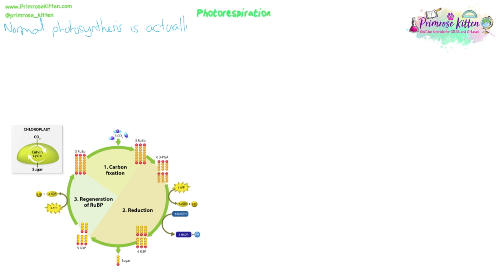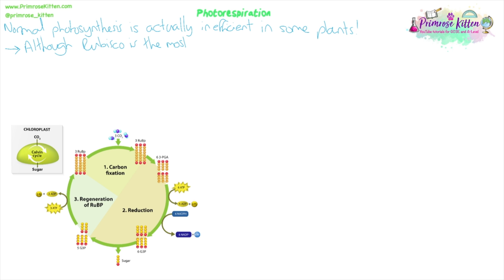Rubisco is the most important enzyme because without it, we wouldn't have oxygen in the atmosphere. It's also the most abundant enzyme on Earth because it's in every chloroplast, in every cell of every plant and everything that photosynthesizes — all photosynthetic algae and cyanobacteria. It's incredibly important and incredibly abundant, but it actually evolved to work in a very high concentration of carbon dioxide. When plants first evolved, the atmosphere was high in CO2 and quite low in oxygen.